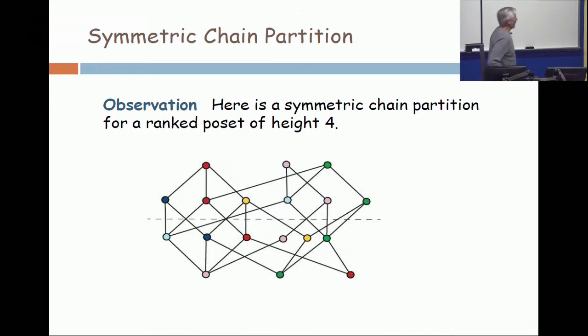Now hopefully, what I have here is a symmetric chain partition for a ranked poset of height 4. There's a red chain coming down this way of size 4. There's a pink chain coming this way of size 4. There's a green chain of size 4. There's a yellow chain going that way of size 2. And there's a pale blue chain going like this of size 2. All the elements belong to one of those chains and they're all symmetric.